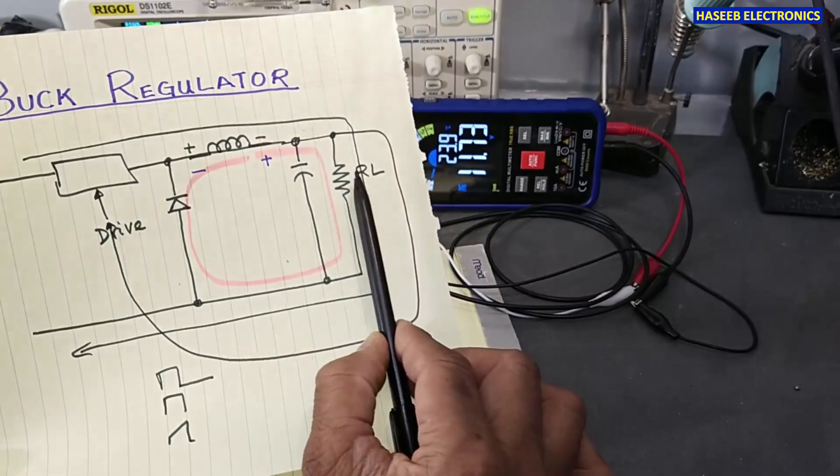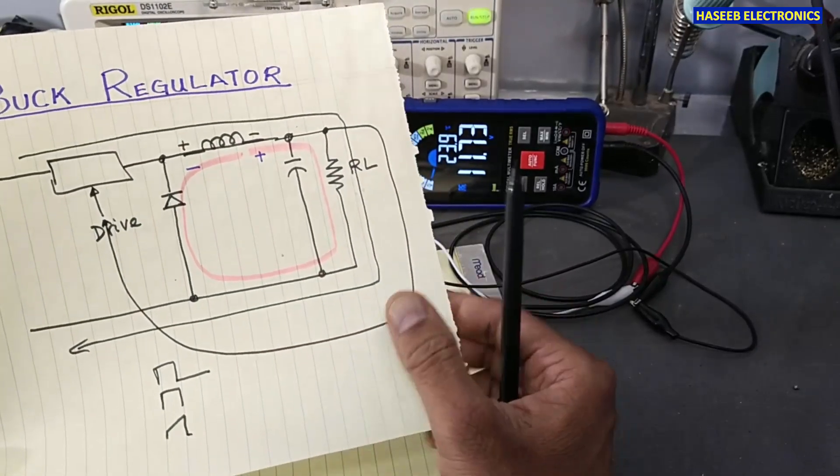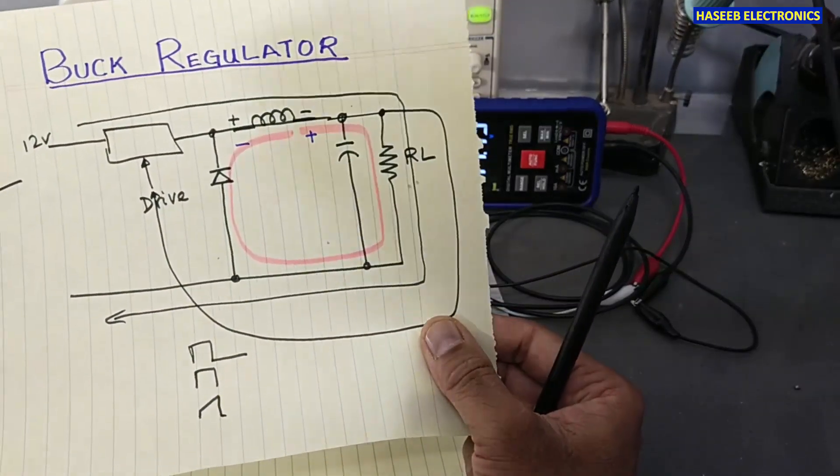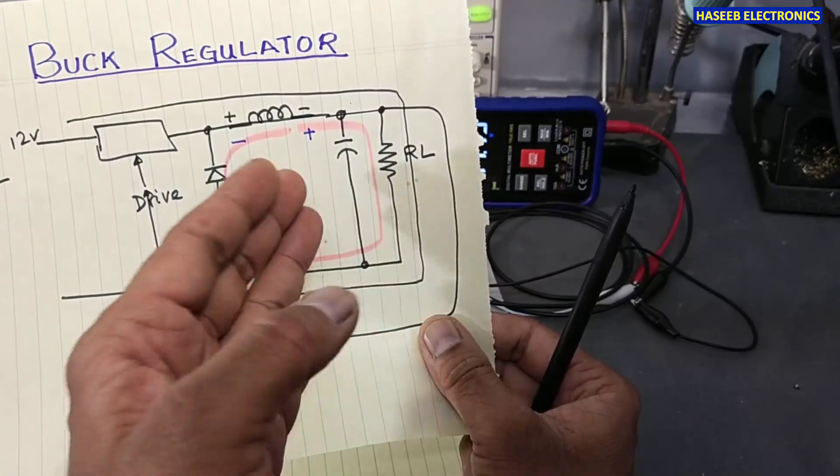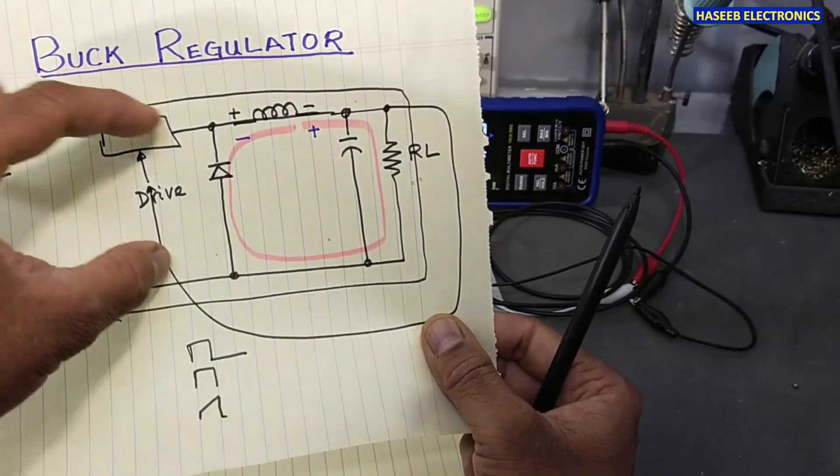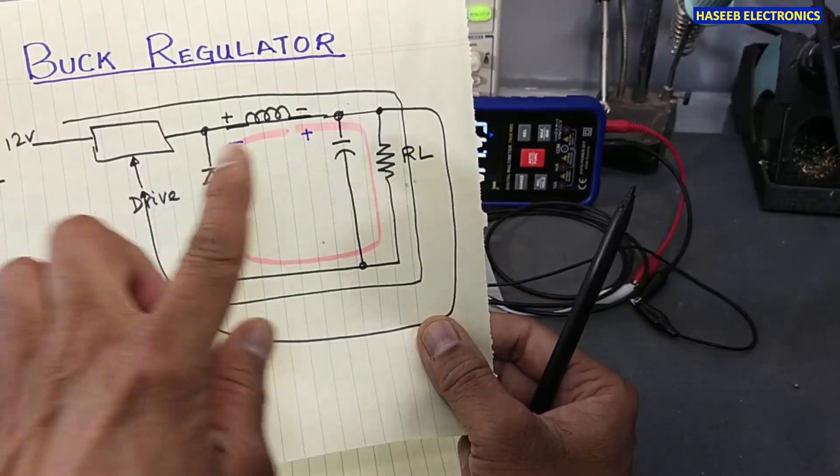It steps down the voltage to our load. For example, here we are providing 12 volts and we need 5 volts, 4 volts, whatsoever. This converter, this regulator, will provide step down voltage from this supply.